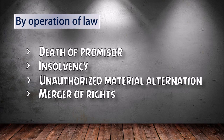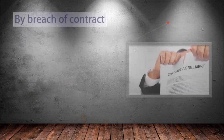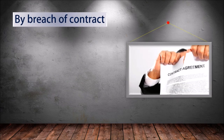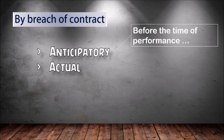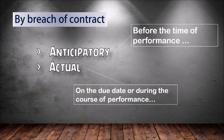Discharge by breach of contract: breach can be anticipatory or actual. Anticipatory breach means refusal of a promise before the time of performance. Actual breach means refusal on the due date or during the course of performance.